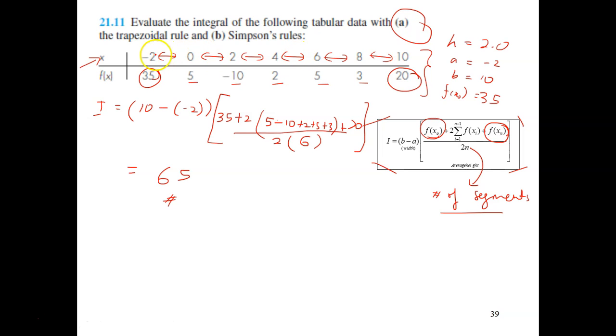So we have no problem. And you know that, how many points we have here? We have seven points and six segments. So if you still remember my note, if we have odd points and even segments, we can use the multiple application of trapezoidal rule or Simpson's one-third.